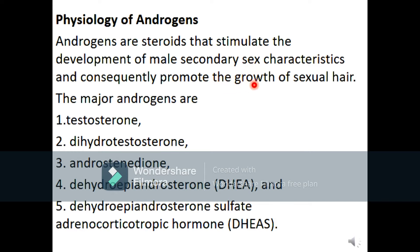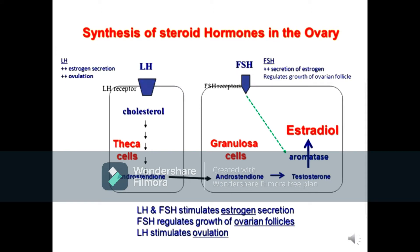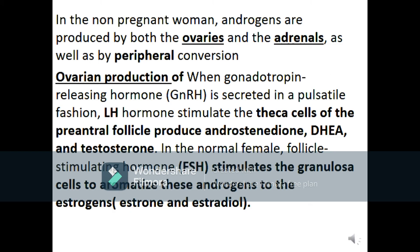Physiology of androgens. Androgens are steroids that stimulate development of male secondary sexual characteristics and consequently promote growth of sexual hair. The major androgens are testosterone, dihydrotestosterone, androstenedione, dehydroepiandrosterone (DHEA), and dehydroepiandrosterone sulfate (DHEAS), which is exclusively related to the adrenal gland.